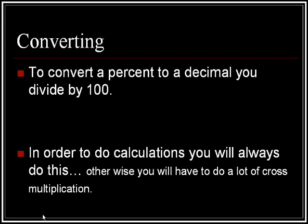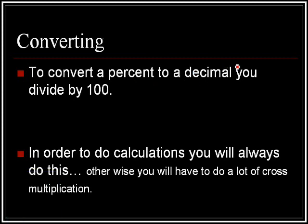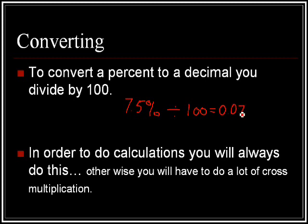Looking back at what we just did, you're going to be converting. To convert a percent to a decimal, you divide it by 100. For example, if I had 7.5% and I wanted to convert that to a decimal, I would divide that by 100, and I would end up with 0.075 as a decimal.